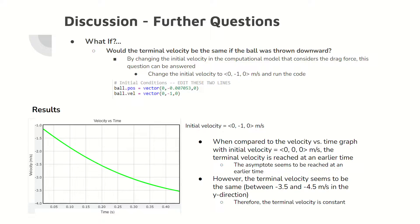To test the what-if question, one must change the initial velocity for the model that considers the drag force so that the velocity is non-zero in the negative y direction. The results show that the terminal velocity, shown as an approaching asymptote, is reached sooner than when the ball is at rest. However, the ball's terminal velocity is around negative 3.5 to negative 4.5 meters per second, which suggests that the terminal velocity does not change even with a non-zero initial velocity.